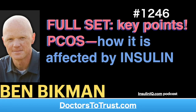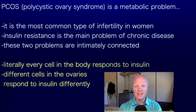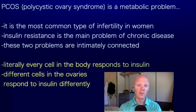Lest the name polycystic ovary syndrome muddy the water, this is a metabolic problem. It is the most common cause of infertility in women, and it's no coincidence that insulin resistance happens to be the single most common metabolic problem, full stop. These two are intimately connected, and it's just a further reflection of how relevant insulin is throughout the body — literally every single cell responds to insulin in some way, and the ovaries are no different.